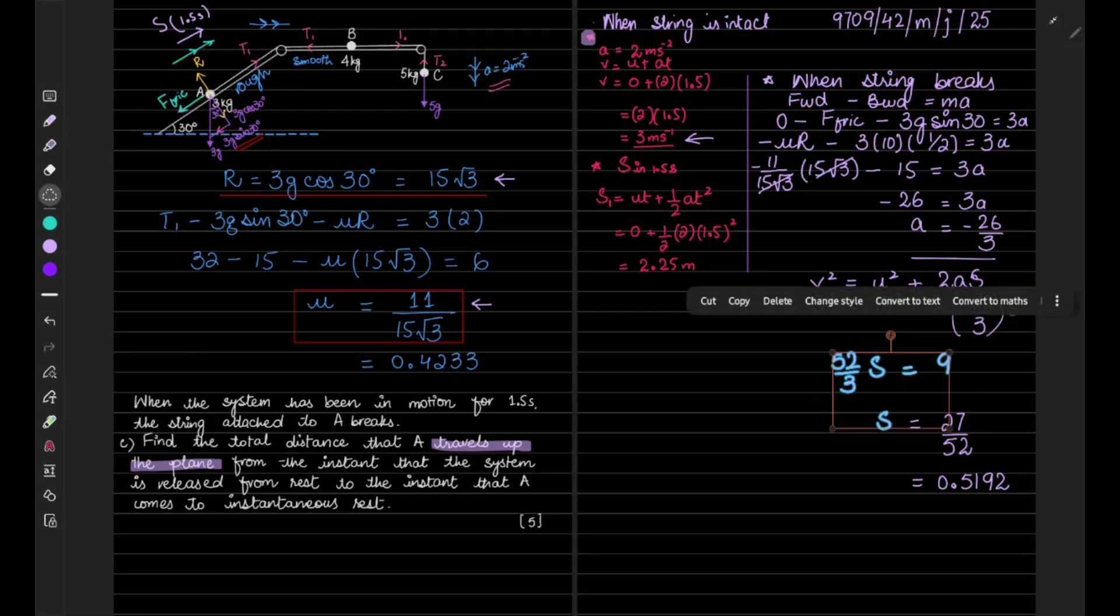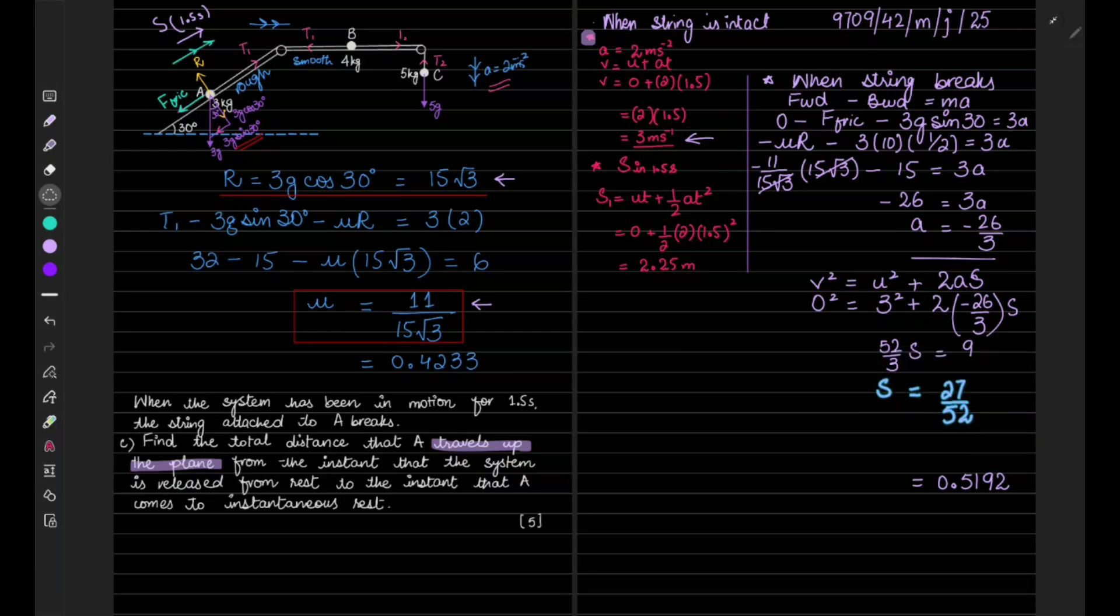Now let's rearrange it a bit because we now have to find the final distance. And the total distance will be the distance first covered when the string was intact, and that was 2.25 meters.